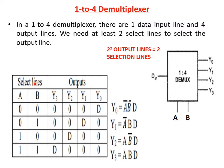This is the function table for the selection lines and outputs. For the 0,0 combination, output Y0 is selected, so Y0 is equal to A bar B bar D. For the 0,1 combination, output Y1 is selected, so Y1 is equal to A bar B D. For 1,0 combination, output Y2 is selected, so Y2 is equal to A B bar D. For 1,1 combination, output Y3 is selected, so Y3 is equal to A B D. This is the working of 1 to 4 multiplexor.